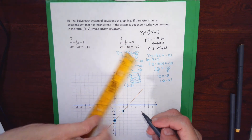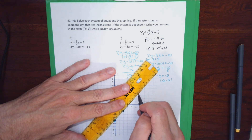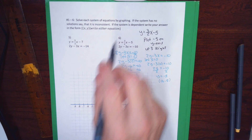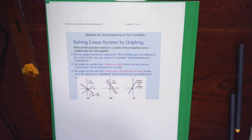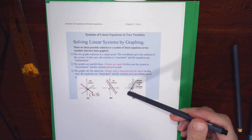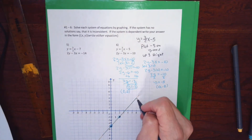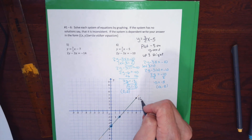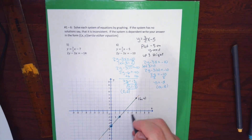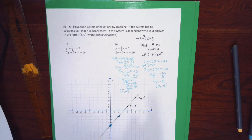When I go to graph the second line, it has the same points as the first line. Those two equations, even though they looked different, graph to be the same line. This is the most complex situation because I have to write the answer carefully. Any point on the line is a solution, and since the line has infinitely many points, any dot I place on the line — like (6, 4) or (4, 1) — represents a valid solution to the system.